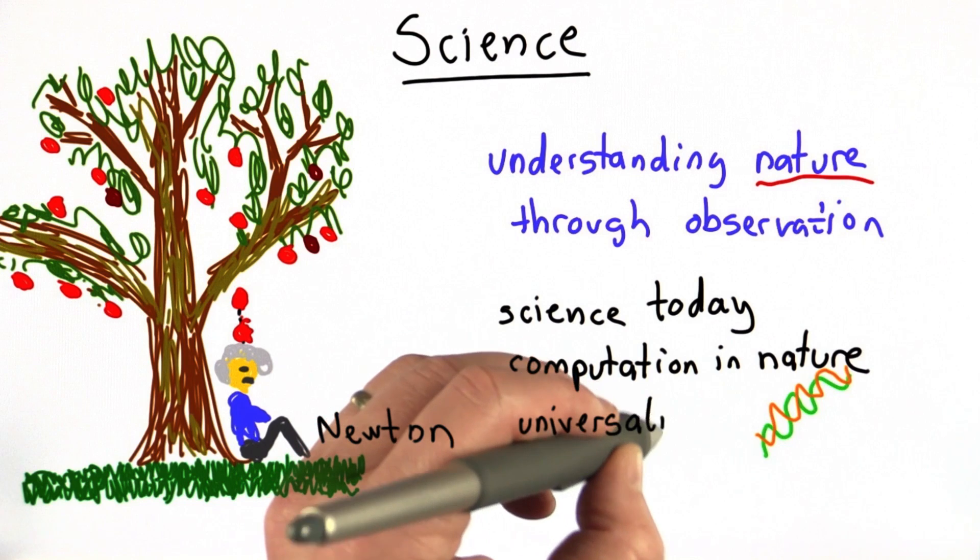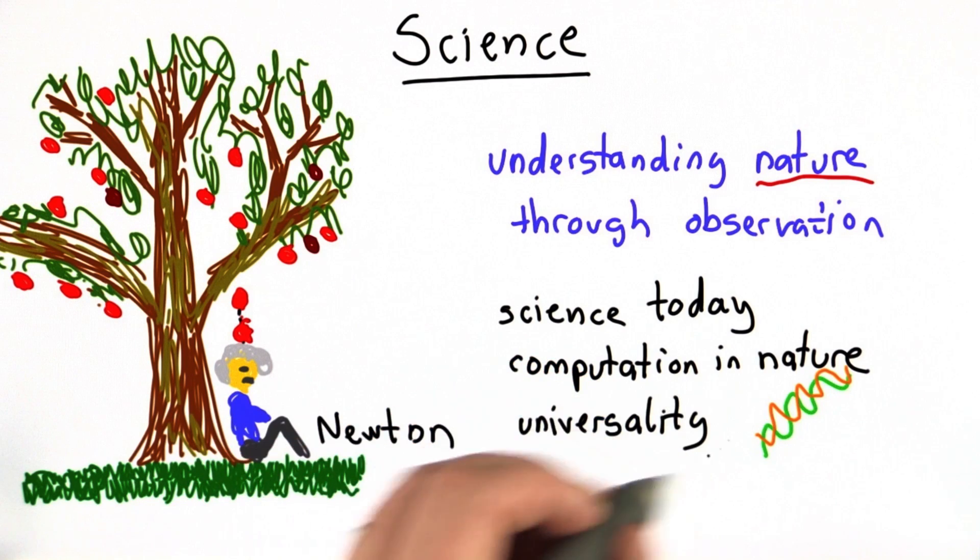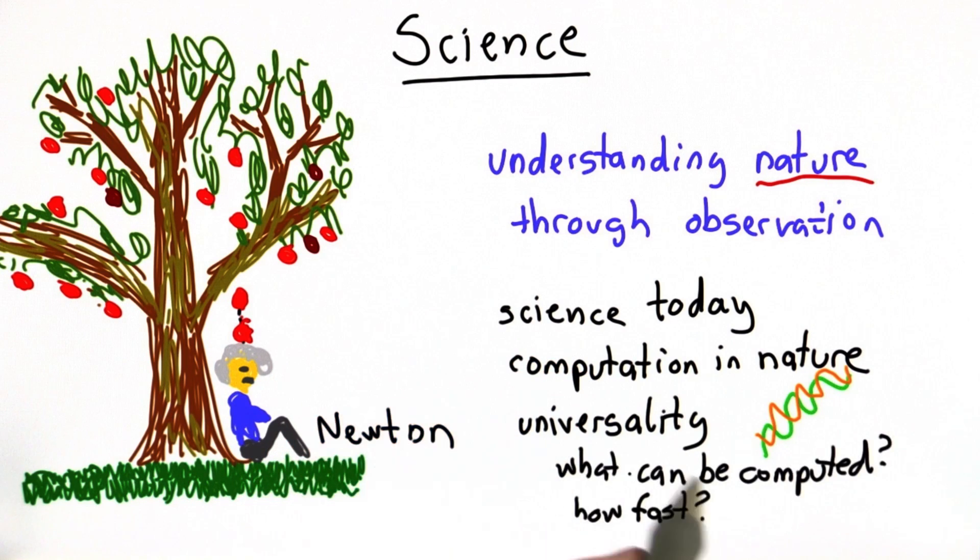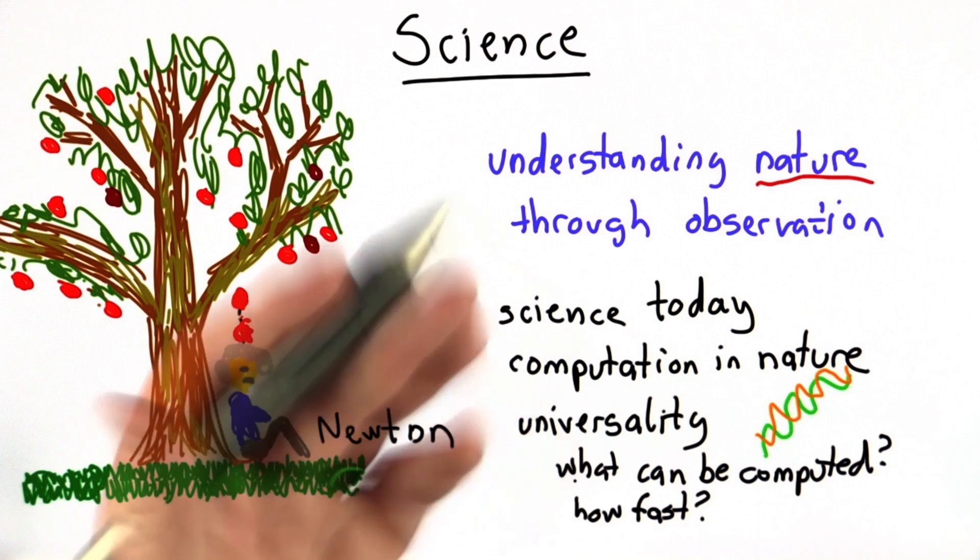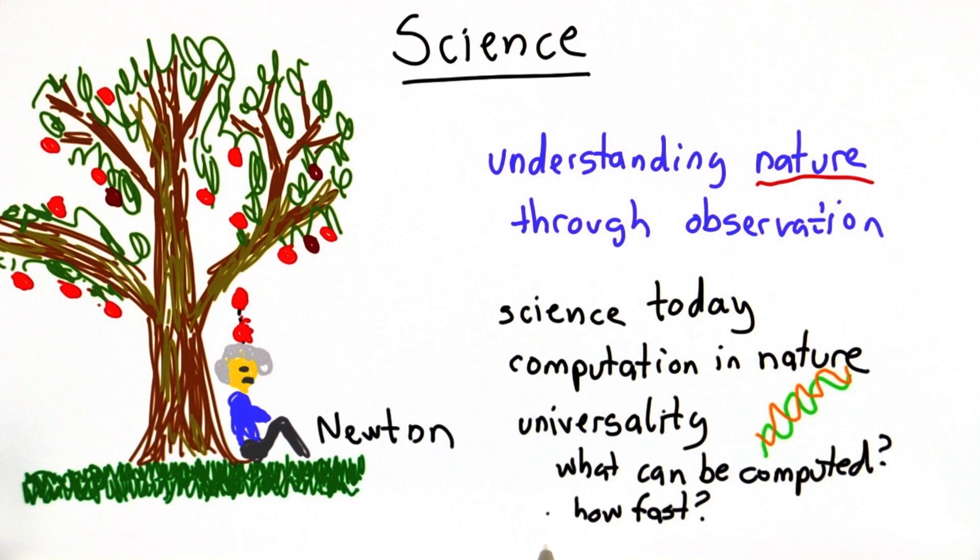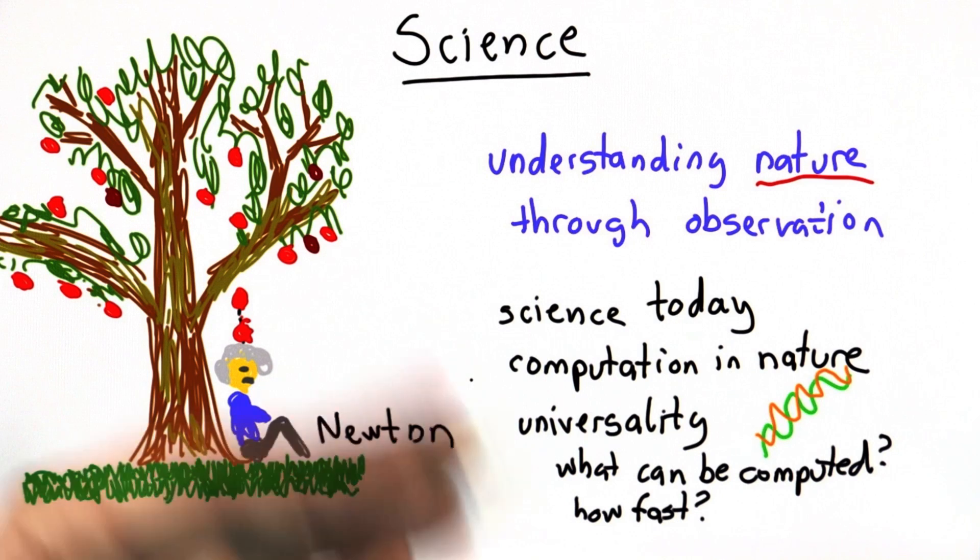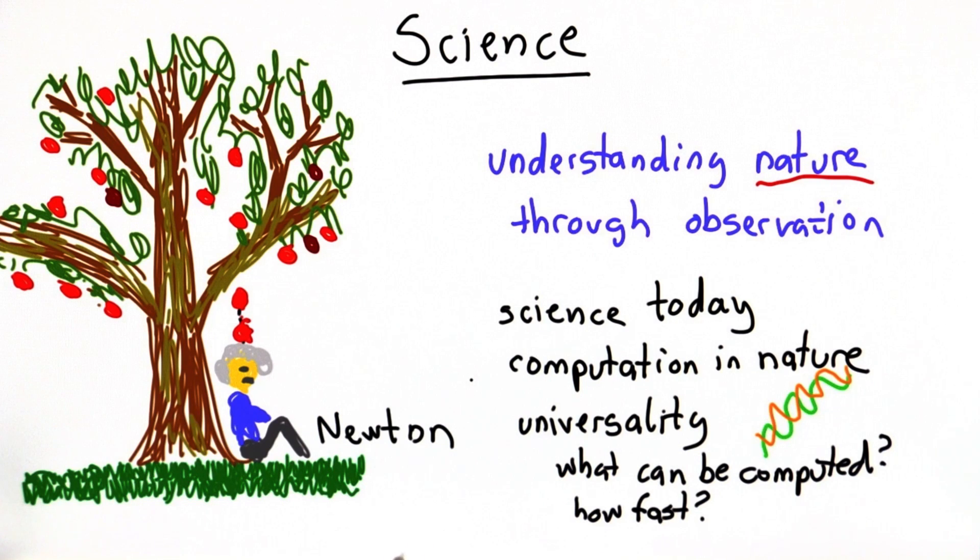And we didn't get to this too much in this class, but this question about universality, questions about what can be computed, and how fast it can be computed, are really fundamental questions about science. They're questions about our universe. They're abstract questions in the sense that we can form them as mathematically precise questions, but they are also really questions about what are the limits and what are the possibilities in our universe.